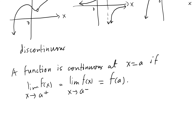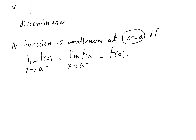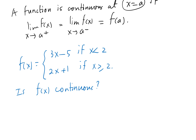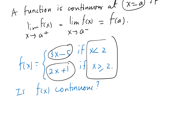For a function to be continuous at a point a, this condition must be met. Consider the piecewise function f(x) = 3x − 5 if x < 2, or 2x + 1 if x ≥ 2. Each piece is a straight line so each is individually continuous. What we need to check is whether these two lines are connected at x = 2 — that's what makes it a piecewise function.